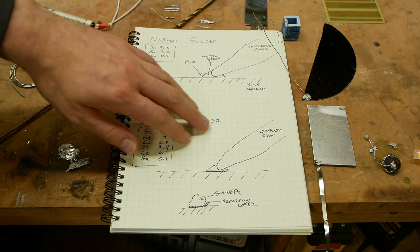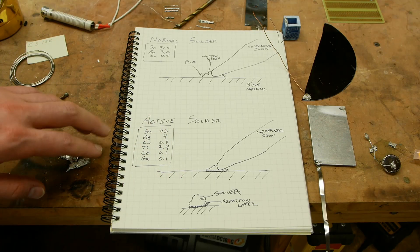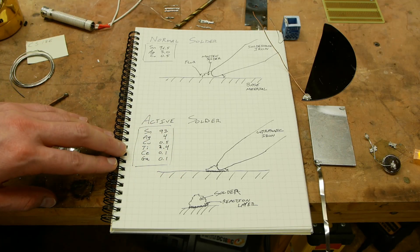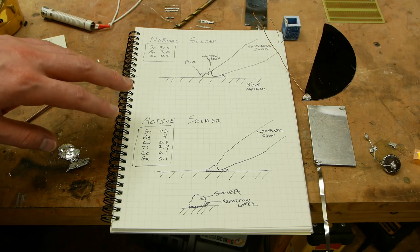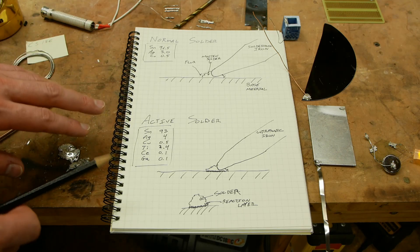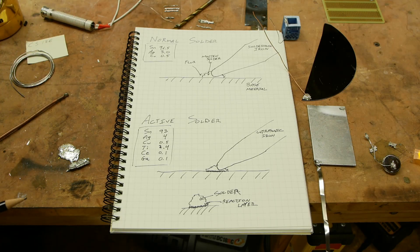The reason that we need the ultrasonic mechanical energy is because the surface wetting is still a problem. Even if the solder is chemically able to bond to non-metals or oxide layers that are on metals, sometimes the surface tension is still so high that the solder can't really get into molecular contact with the surface.